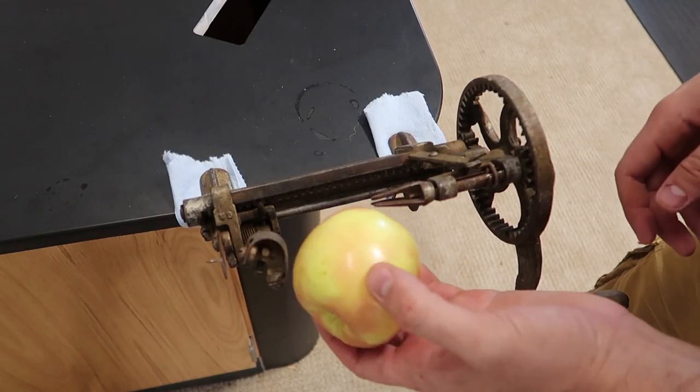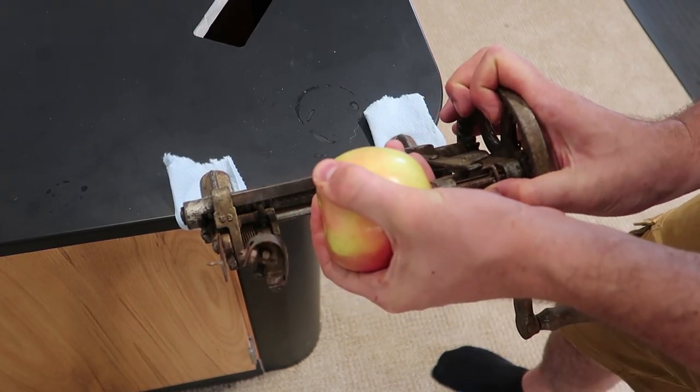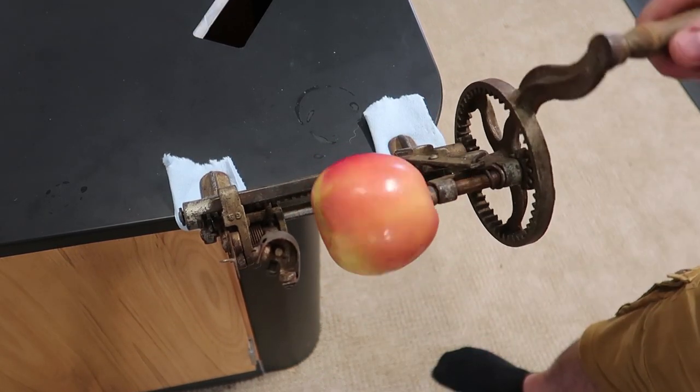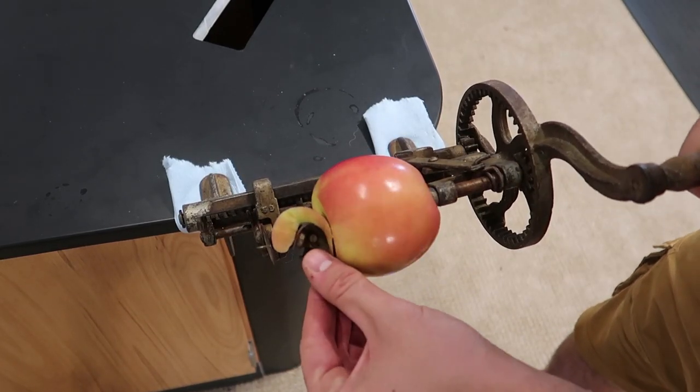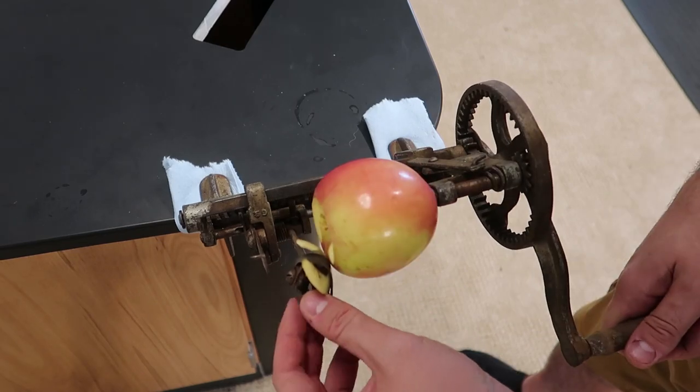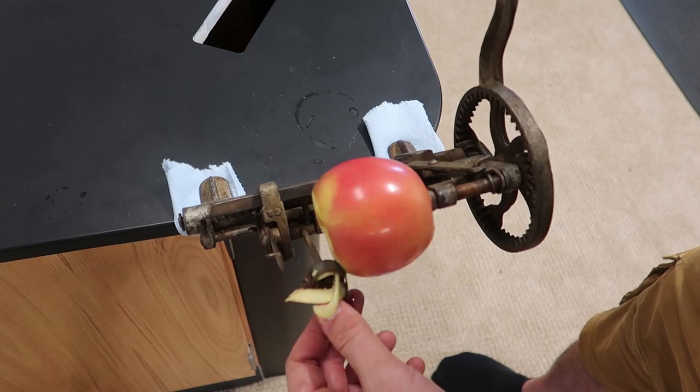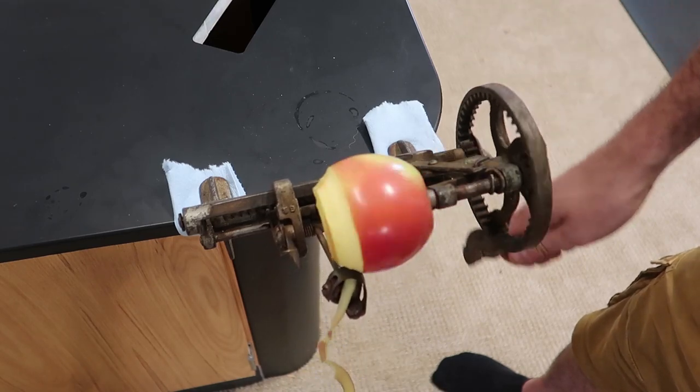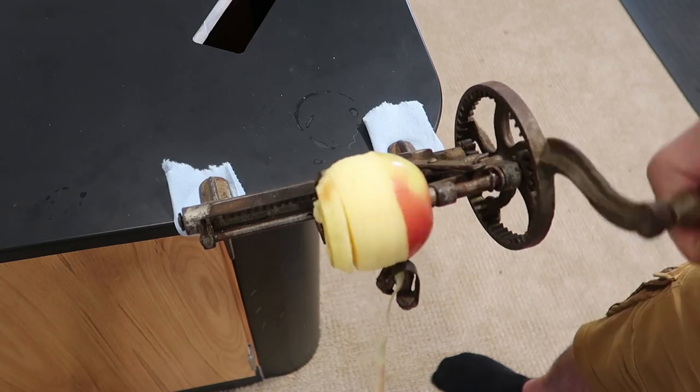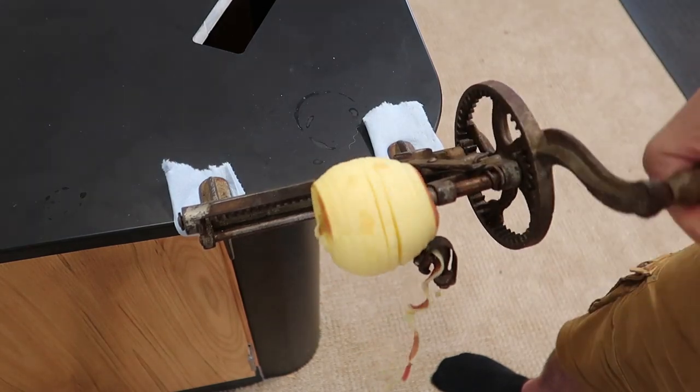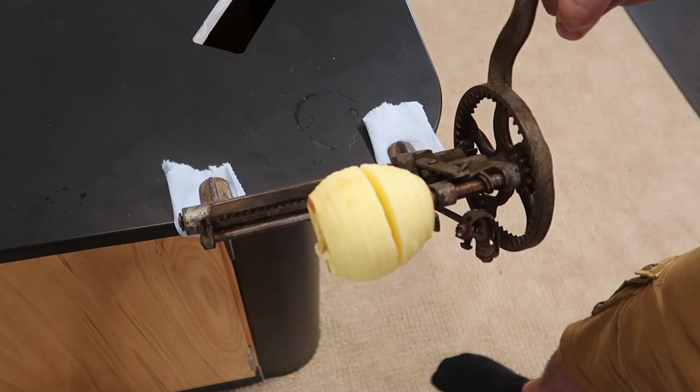Let's see how this apple peeler works. You stick an apple like this. There you go. And then we're going to spin it. And the apple will spin. This right here needs to be adjusted a little bit, I think. There you go. Wow, that's pretty nice. And it's actually a slicer, too. There you go.